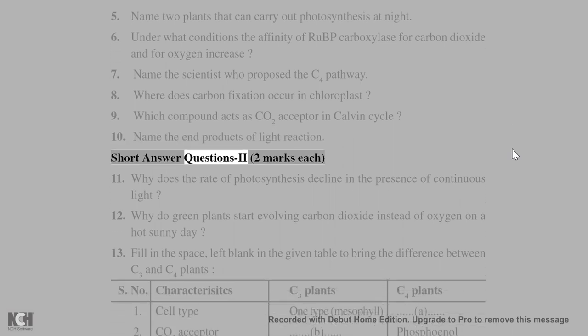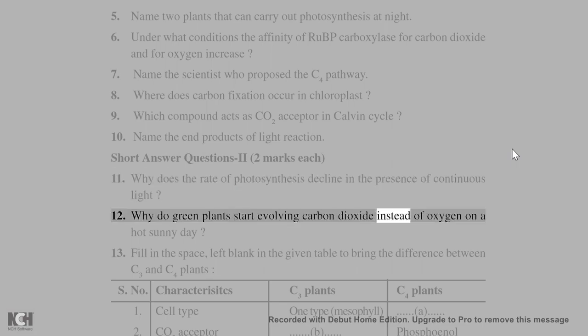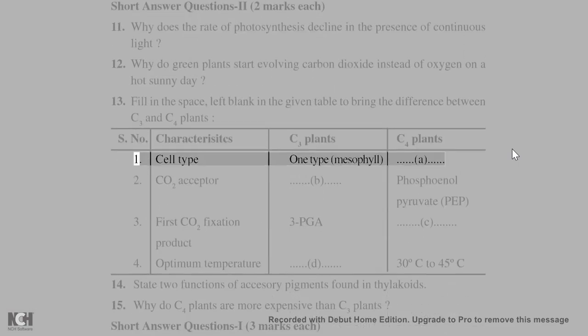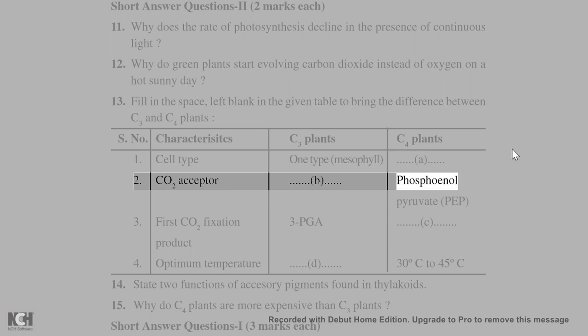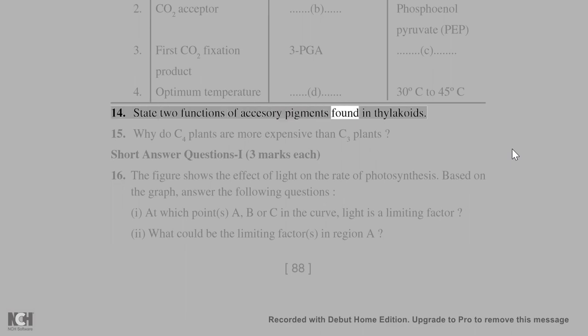Short answer questions 2 (2 marks each): 11. Why does the rate of photosynthesis decline in the presence of continuous light? 12. Why do green plants start evolving carbon dioxide instead of oxygen on a hot sunny day? 13. Fill in the space left blank in the given table to bring the difference between C3 and C4 plants. Table shows: Cell type, CO₂ acceptor, CO₂ fixation product, Optimum temperature - with various blanks marked A, B, C, D. 14. State 2 functions of accessory pigments found in thylakoids. 15. Why do C4 plants are more expensive than C3 plants?